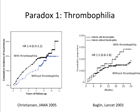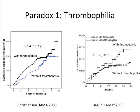We'll use the thrombosis potential model as a tool to understand why the risk profile of recurrence is so different from that of a first event, and to understand these recurrence paradoxes. The first paradox is the famous thrombophilia paradox. Thrombophilia increases the risk of a first event quite substantially, with relative risks between 2 and 7 depending on the factor. But for recurrence, the effect is only marginally increased, with relative risks just above 1.